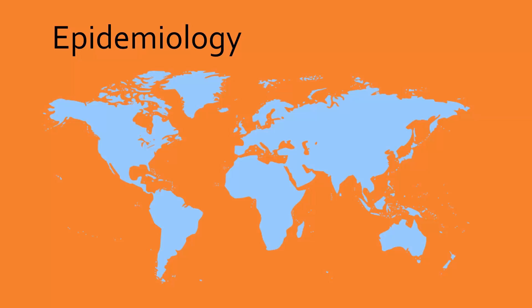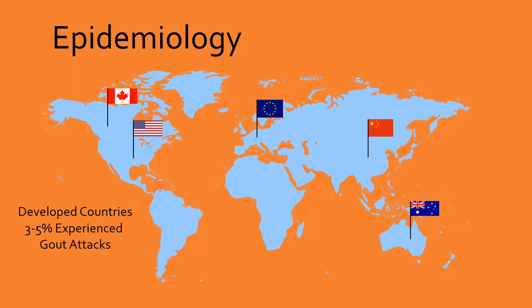Nowadays, since high purine content foods are more accessible, gout has been steadily increasing in frequency in developed countries such as Canada, the US, many European countries, China, and Australia, with about 3-5% of the population affected by at least one gout attack in their lifetime. Comparatively, less developed countries have rates of gout less than 1%. Over 50 million people are affected by gout worldwide, making it an extremely common ailment.